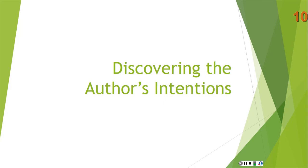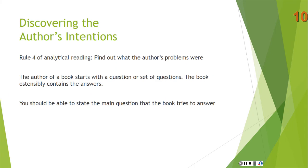Rule 4 of analytical reading: discover the author's intentions — find out what the author's problems are. What sort of problem is the author seeking to address through the book? The author starts with a question or set of questions, and the book ostensibly contains the answers. So you should be able to state the main question the book tries to answer. This is another way of talking about the unity or point of the book: what is the author's problem and what is the answer to that problem?